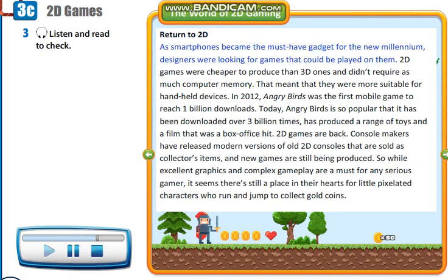Return to 2D. As smartphones became the must-have gadget for the new millennium, designers were looking for games that could be played on them. 2D games were cheaper to produce than 3D ones and didn't require as much computer memory. That meant that they were more suitable for handheld devices. In 2012, Angry Birds was the first mobile game to reach 1 billion downloads. Today, Angry Birds is so popular that it has been downloaded over 3 billion times, has produced a range of toys, and a film that was a box office hit. 2D games are back.